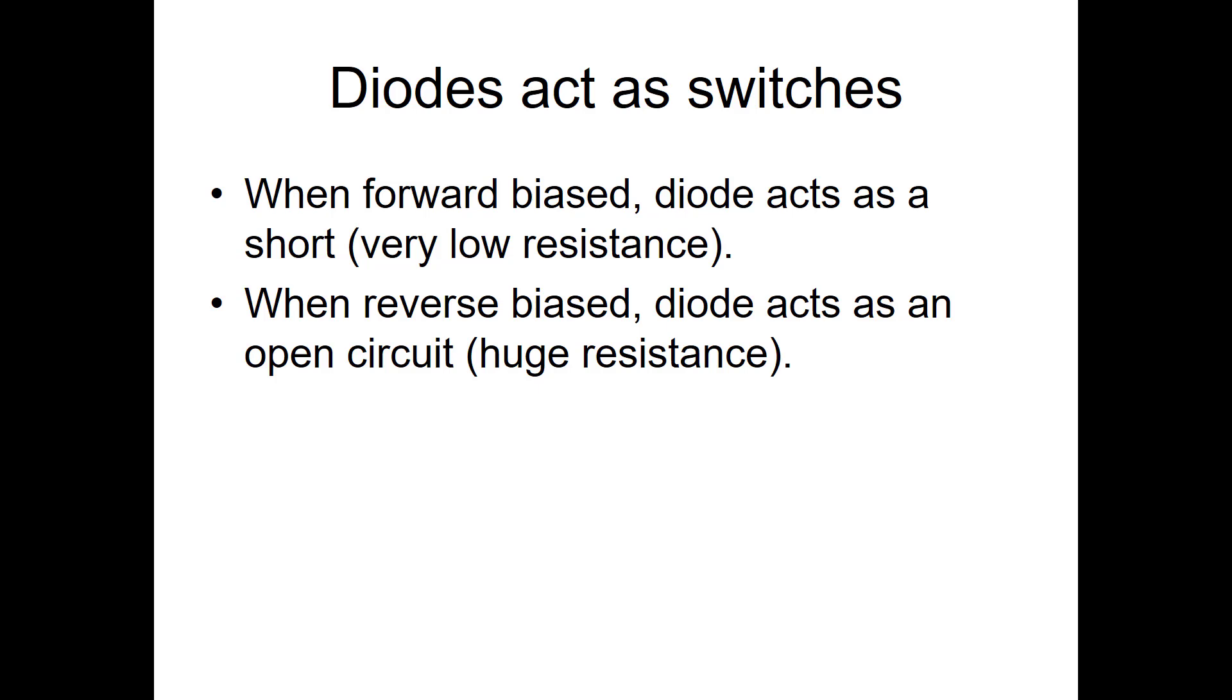Diodes are built to act as switches. One of their functions is to conduct electricity very easily in one direction but not allow it to conduct backwards. Because when they're forward biased, diodes act as a short, a very low resistance. When they're reverse biased, they act as an open, a very large impedance or resistance.